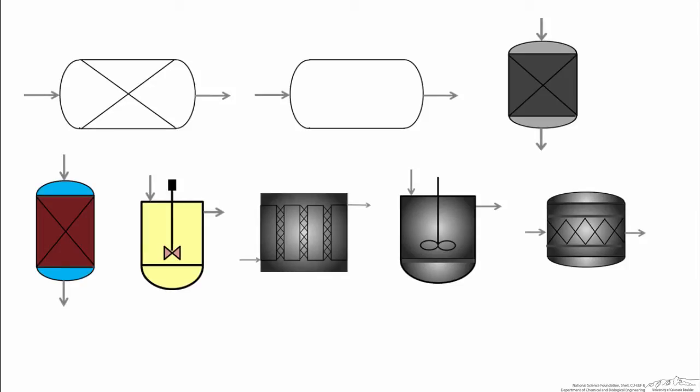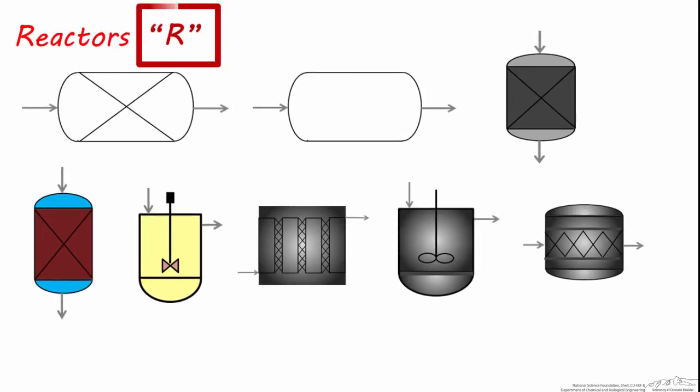Here we have an equipment type which is critical to almost any chemical process. See if you know what these are. These are all reactors, and they have the letter abbreviation R.